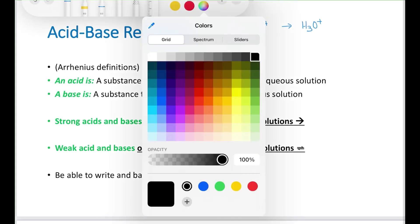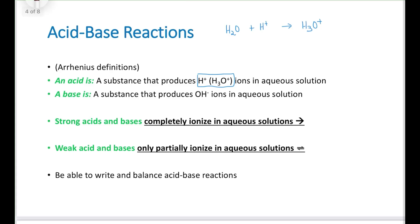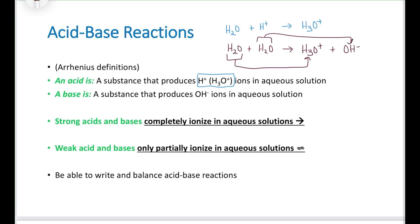Water can actually act as both. If I have a mole of water reacting with another mole of water, I can produce a mole of H3O+ and a mole of OH minus — one molecule acting as an acid, the other acting as a base. Strong acids and strong bases — which you will have to memorize — completely ionize in aqueous solutions. For example, HCl is a strong acid. When I put HCl in solution, it forms H+ ions and Cl minus ions.